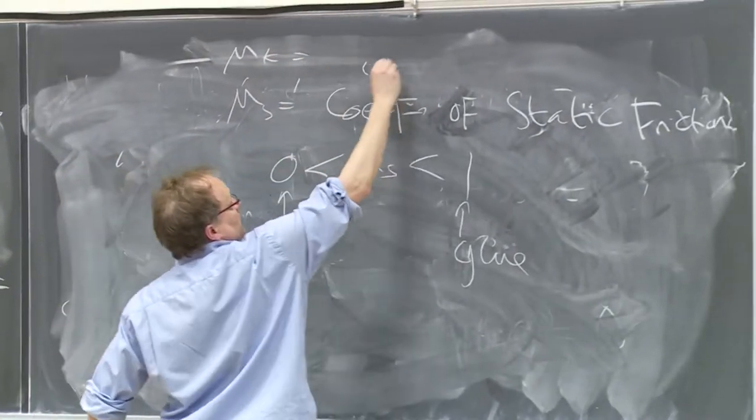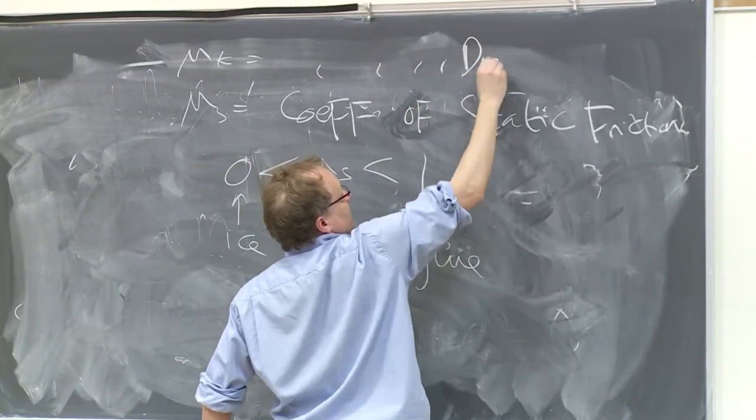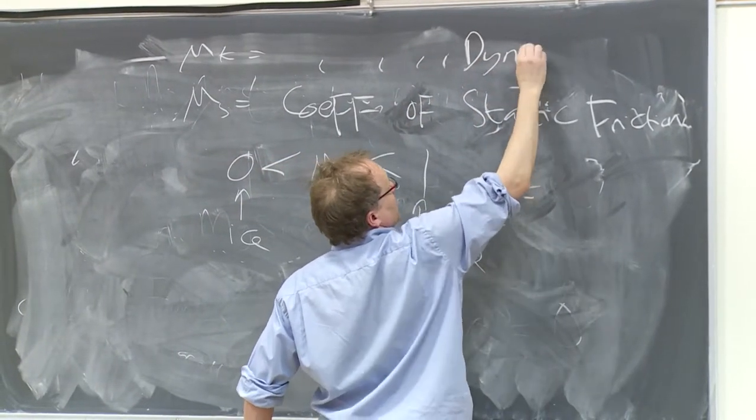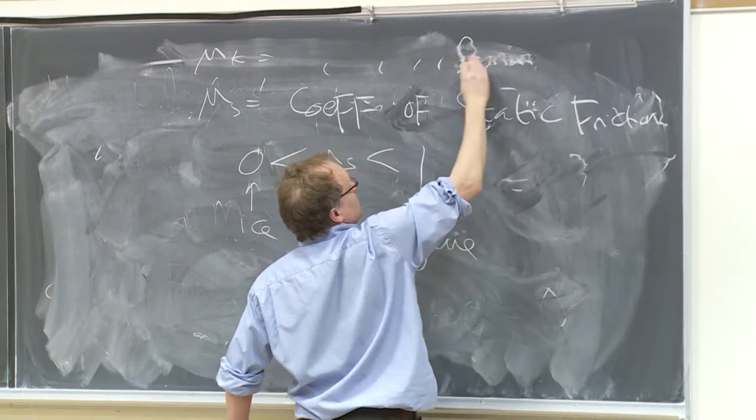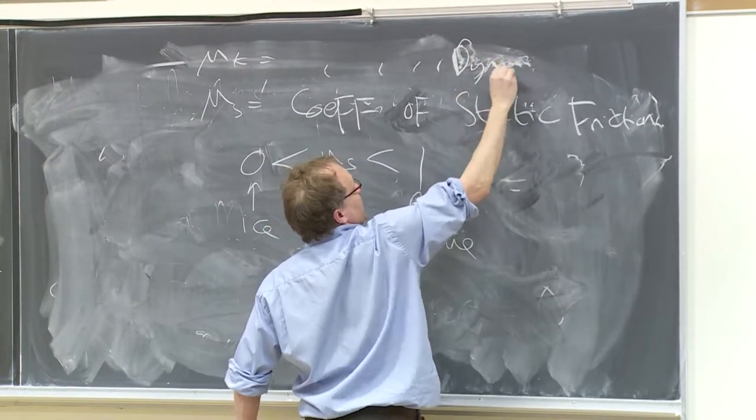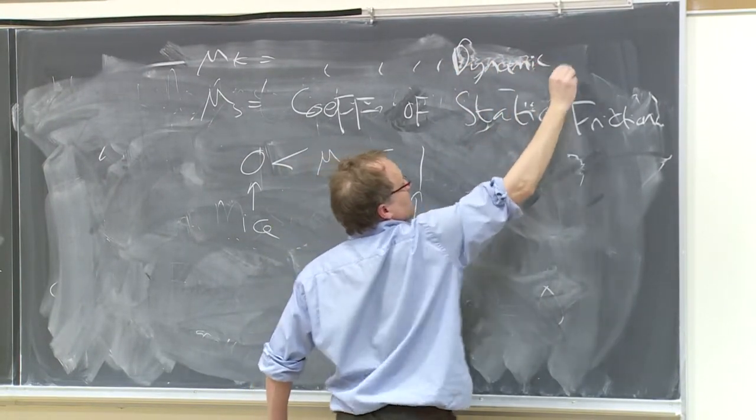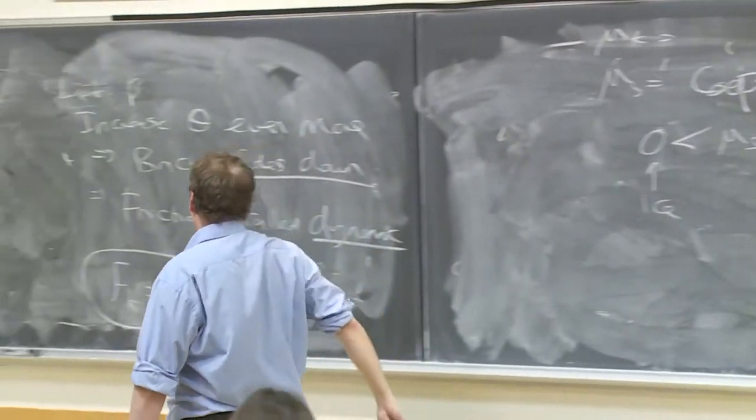Mu k equals coefficient of dynamic - my hand's getting sore - D, Y, N, A, M, I, C friction. And one more minute.